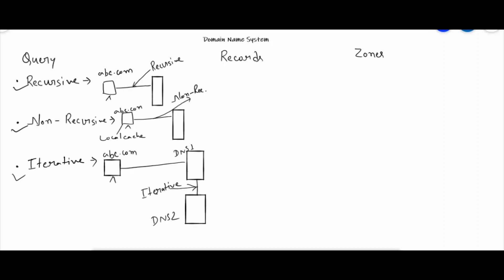Now let's move on to DNS records. There are multiple records, but we'll discuss the most commonly used ones. The first is the A record, which maintains IPv4 address records. Next is the AAAA record, which maintains IPv6 records. Then we have the MX record, which maintains email-based records.